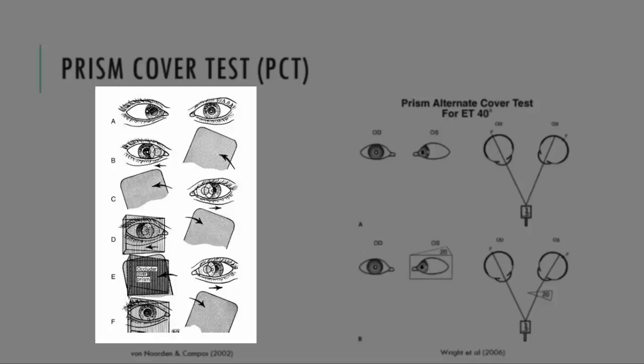So this information is coming from your cover test. Your cover test will indicate we have a right ET, and so when you go to record your PCT, it's clear that what you've recorded there is the recording of how large that right esotropia is. So the Prism Cover Test goes hand-in-hand with the cover test. You perform the cover test first, you establish what strabismus is present, and then you go and measure it.